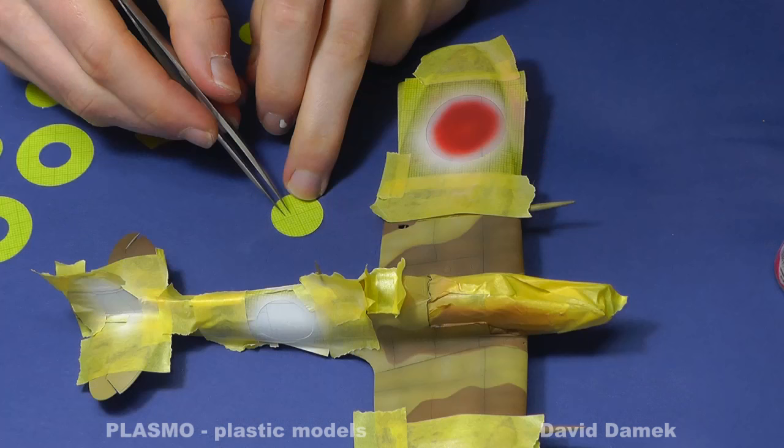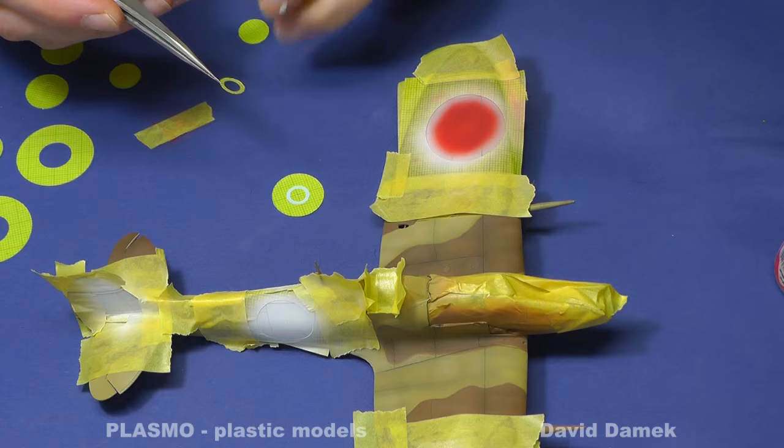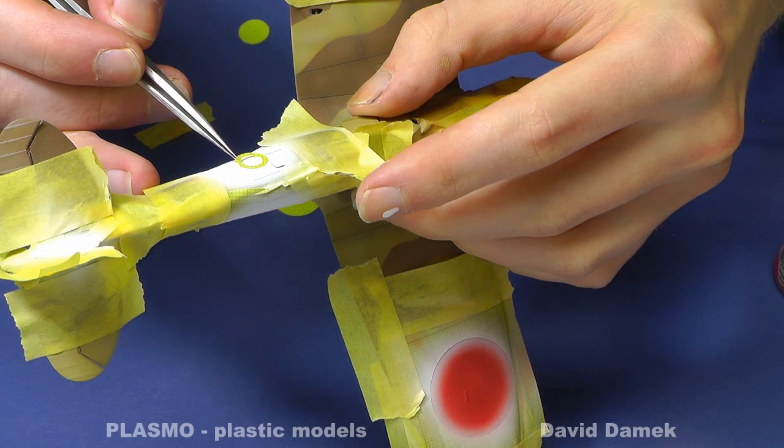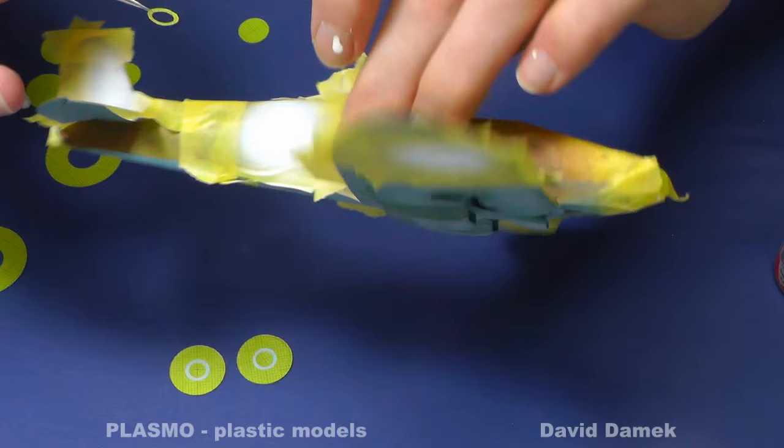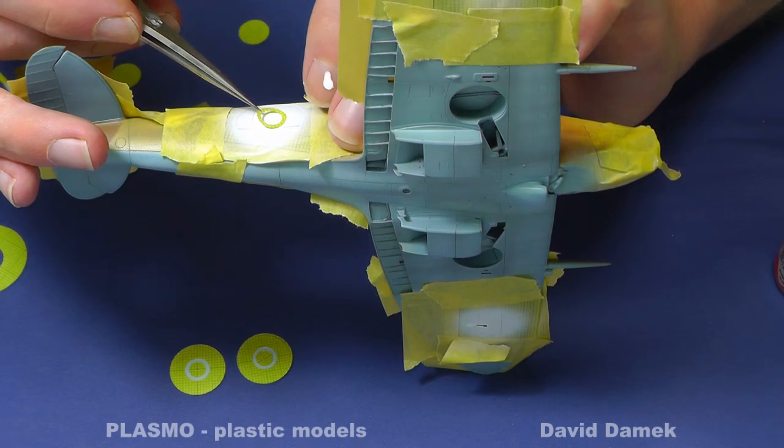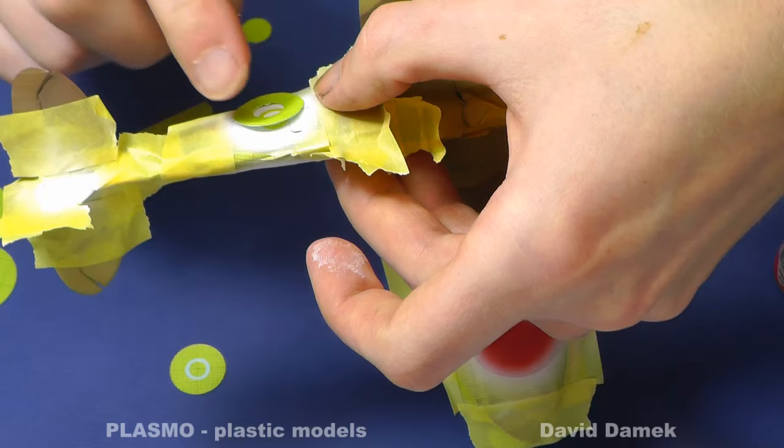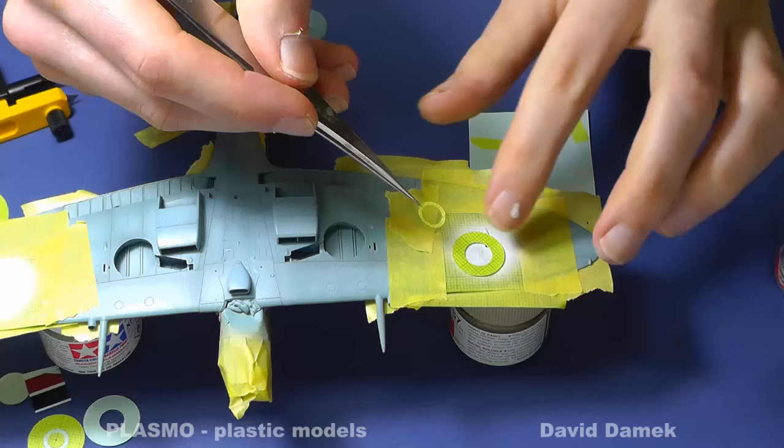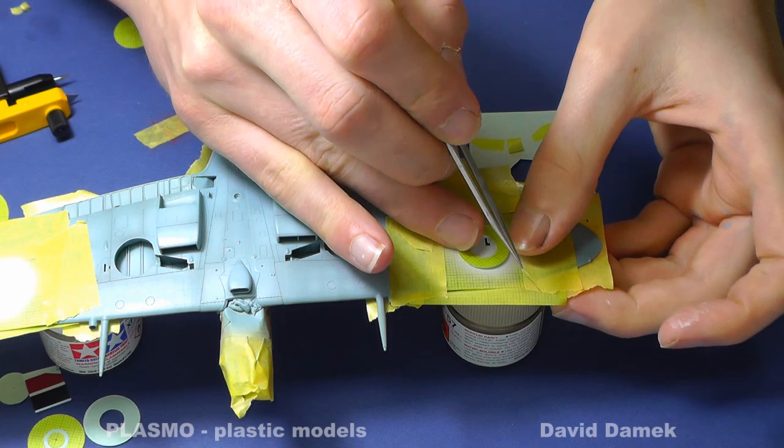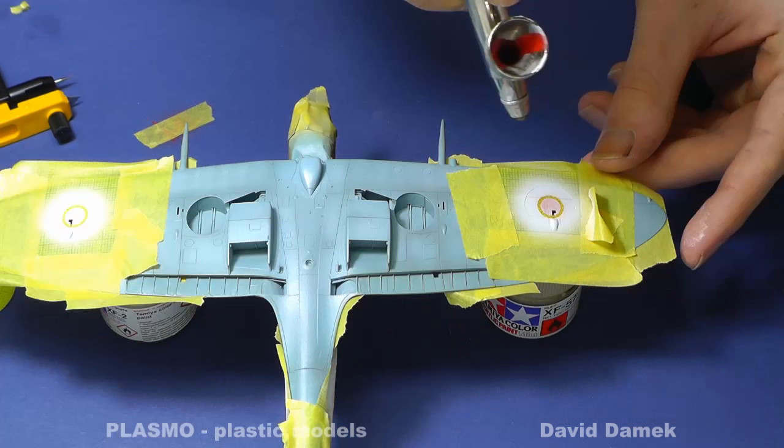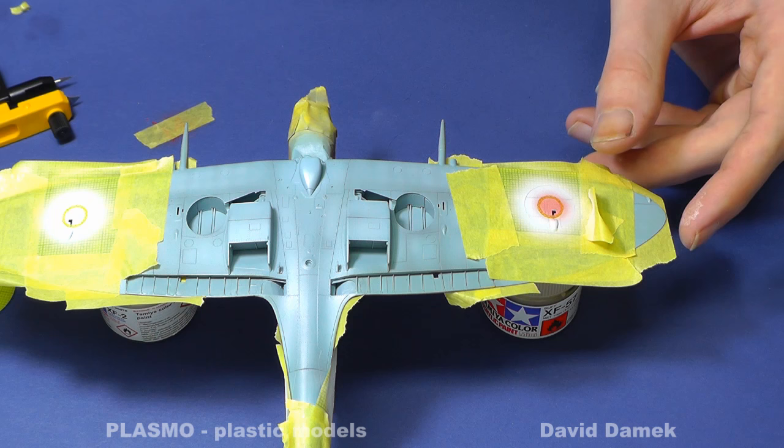The side roundel is a bit more complicated. I covered the white circle with a prepared stencil. Again, it is necessary to ensure the correct orientation relative to the center. I used a previously cut out circle as a template.